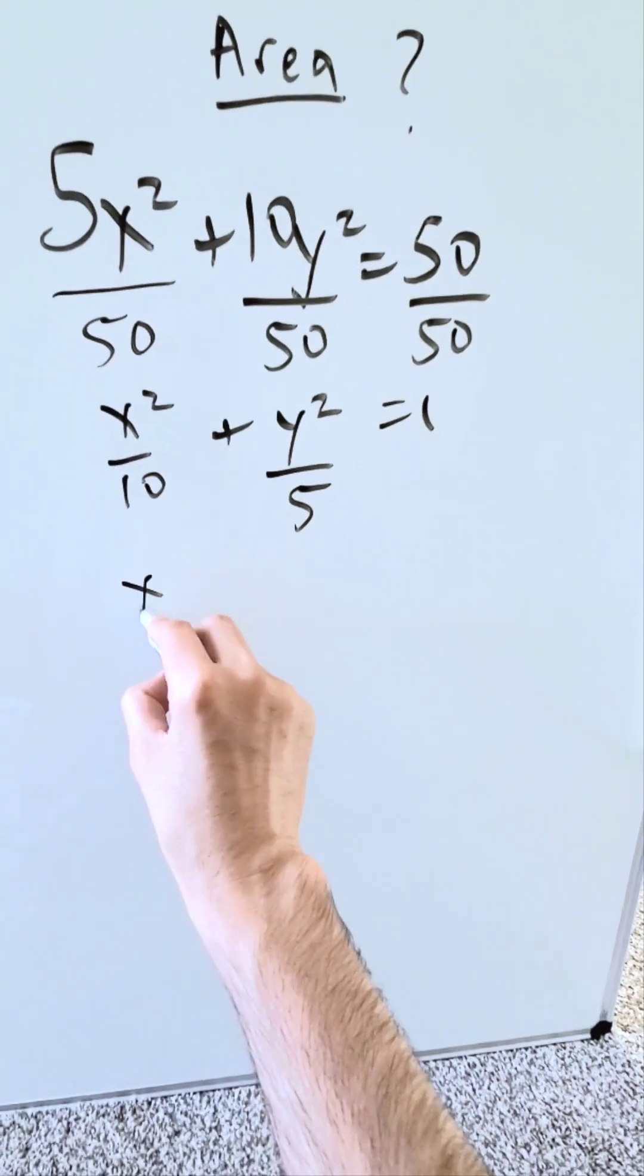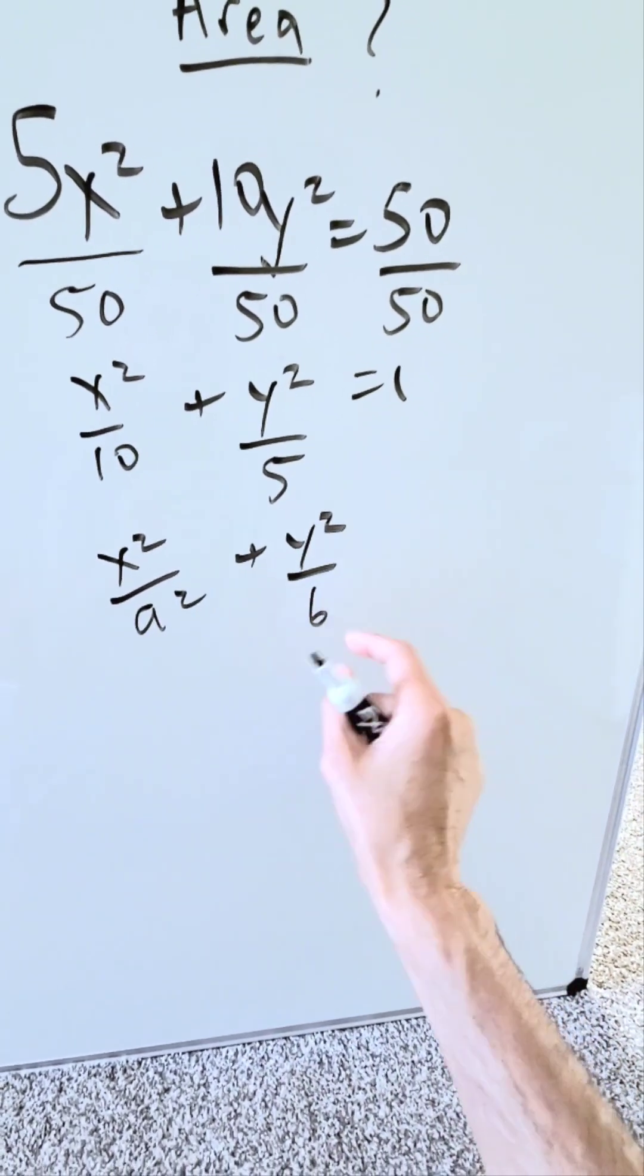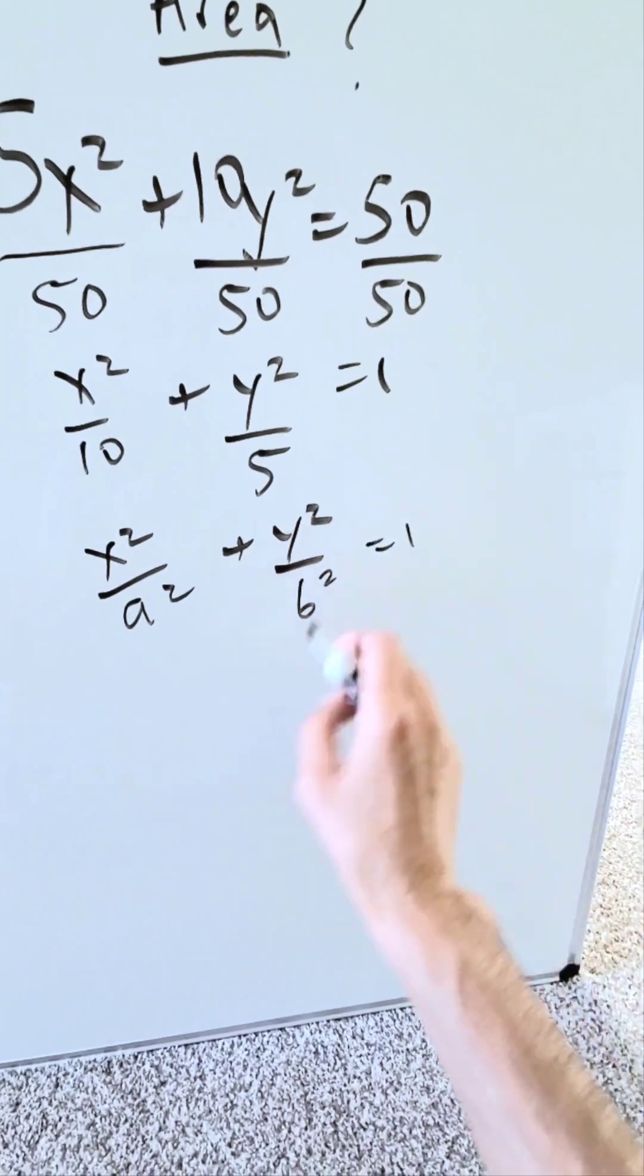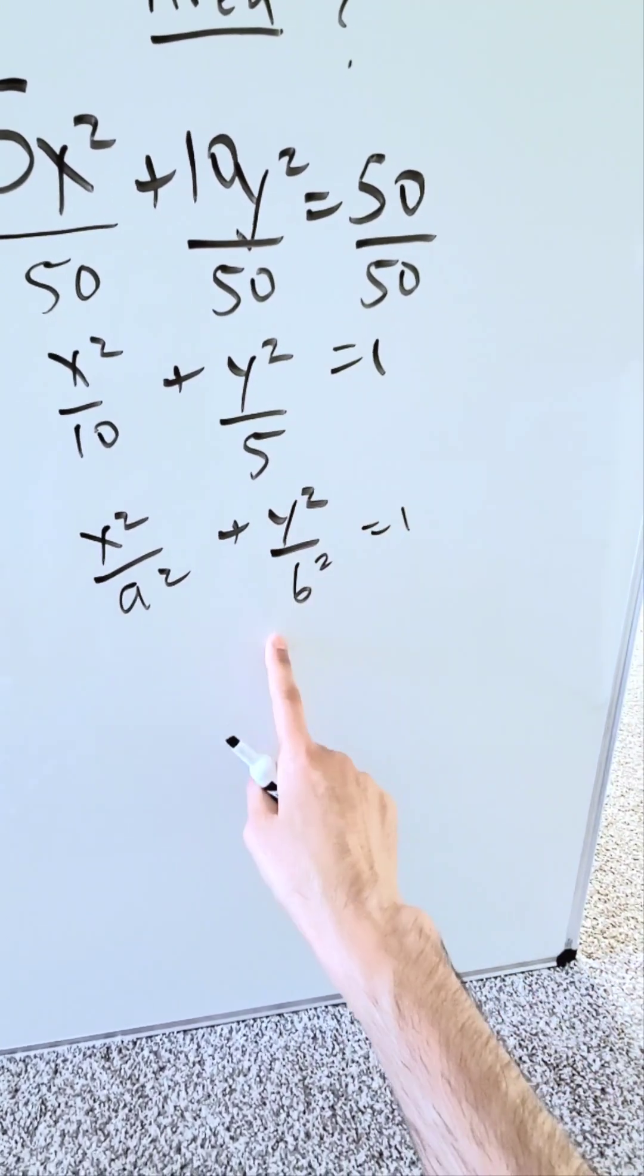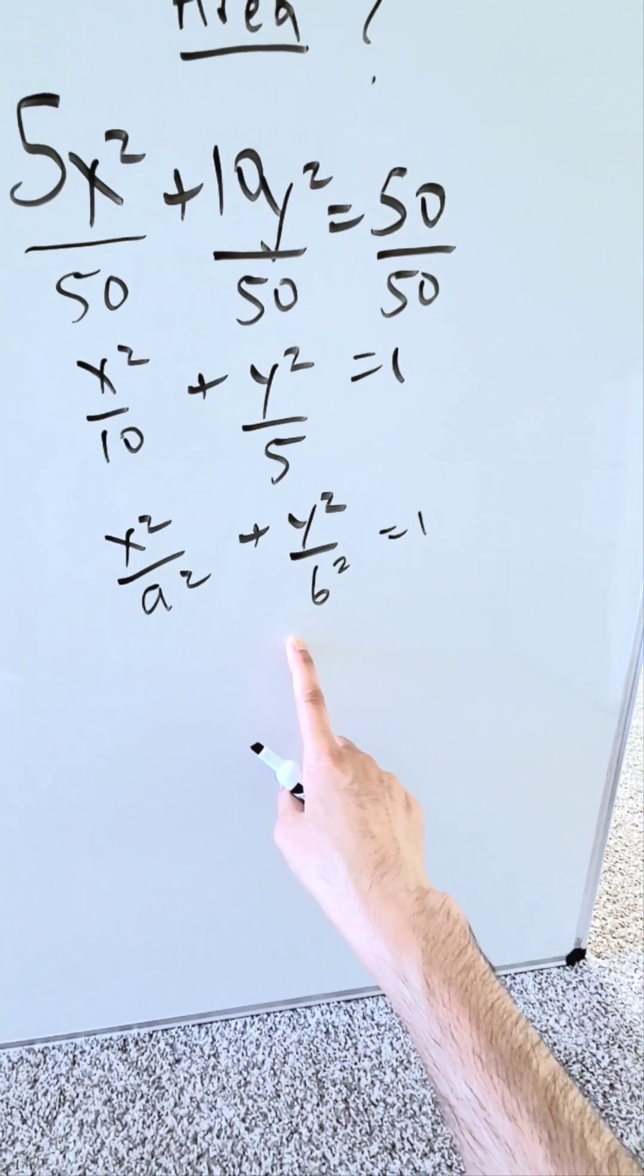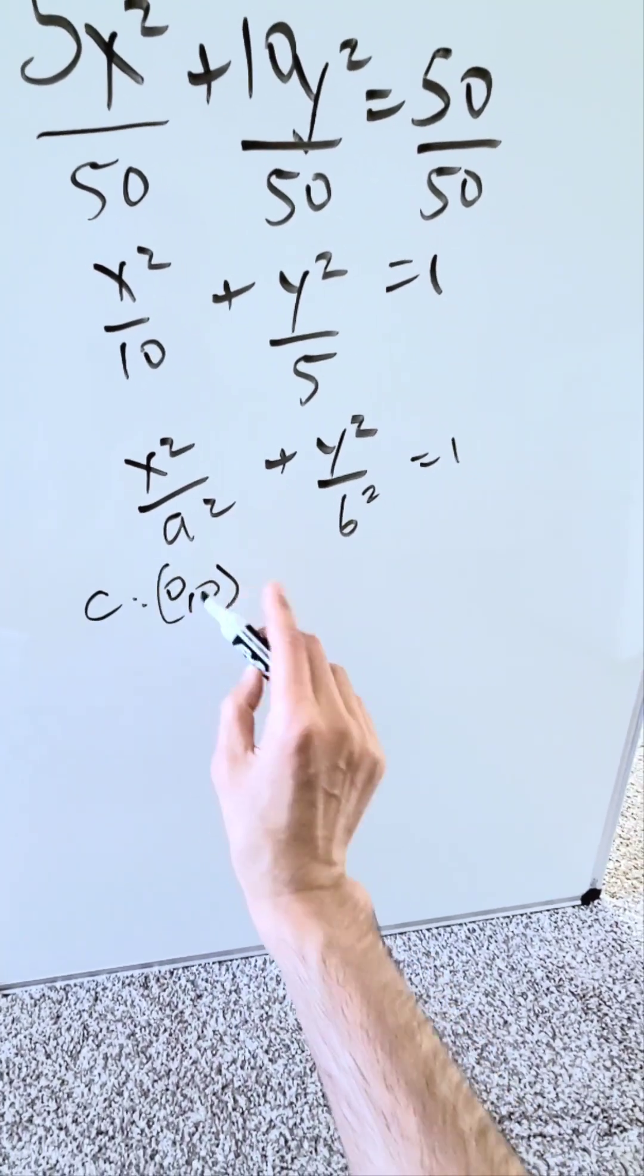Now when I'm looking at this, it looks very much like x squared over a squared plus y squared over b squared is equal to 1. Now look, the larger number here is attached to x, smaller with the y, so we're looking at a horizontally oriented ellipse with a center at the origin. That's what it is, a horizontally oriented ellipse.